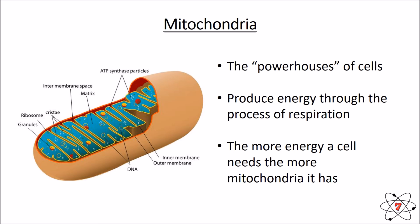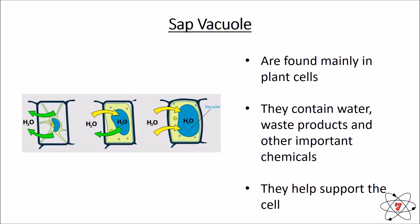Now we're onto the things that are only really found in plant cells. We've got the sap vacuole. Their main job is storing water and all the chemicals that the plant cell needs to stay alive. If you add too much water into that vacuole, they explode. Take all the water away, they wither — which is no good because their main job is to support the cell. Animal cells do have them too, but they're really, really tiny.